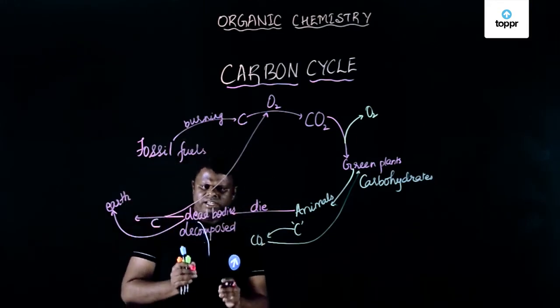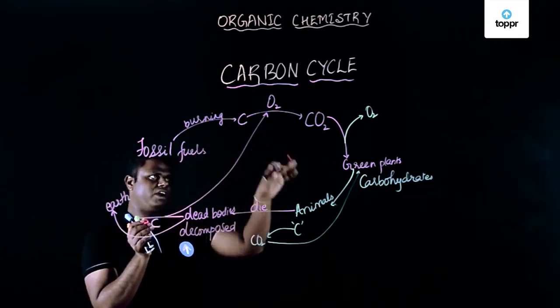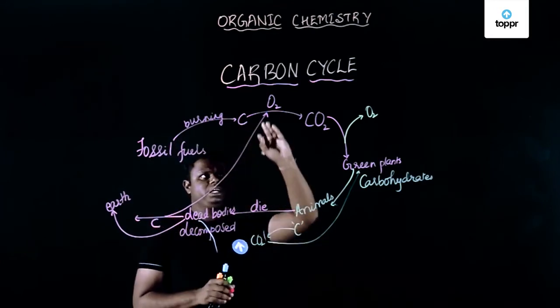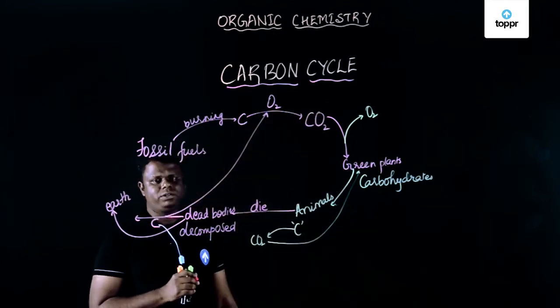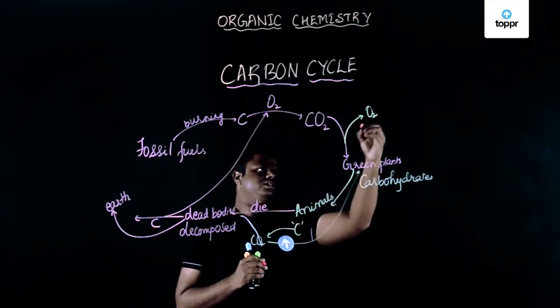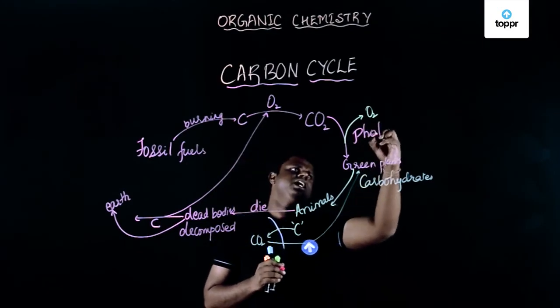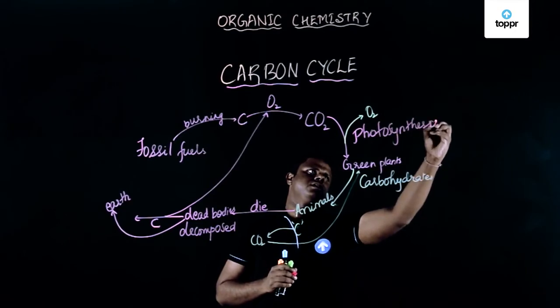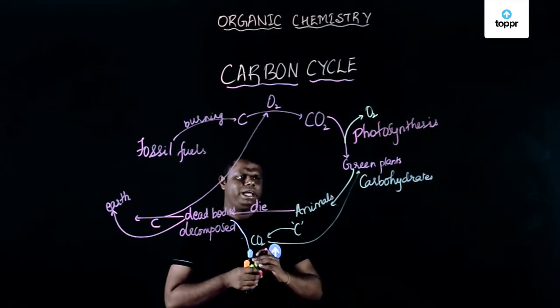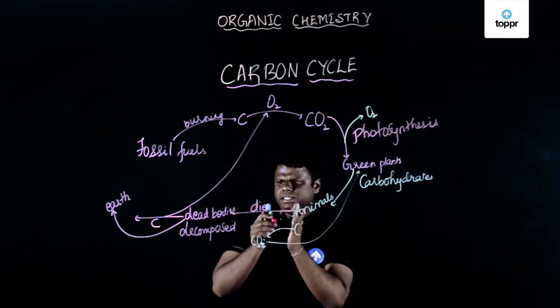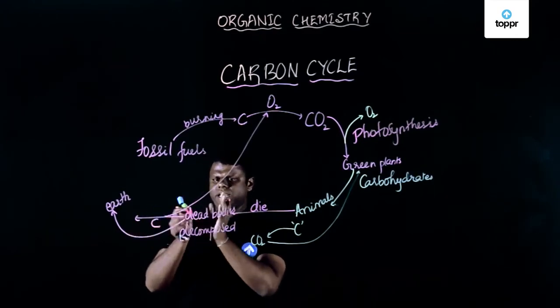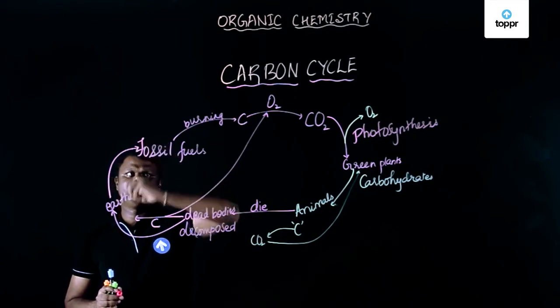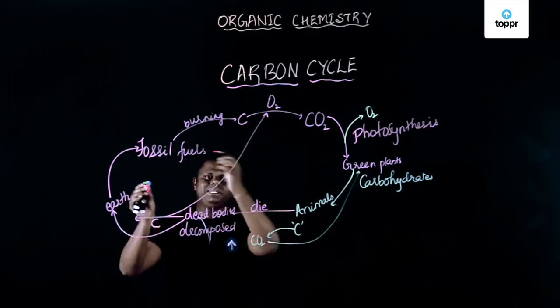This is the entire journey of carbon from fossil fuels. Carbon is obtained, carbon combines with oxygen to form carbon dioxide. This process is basically photosynthesis and then green plants are eaten by animals. Animals when they die, their dead bodies are decomposed and buried into the earth and this again forms a component of the fossil fuel. This is basically the carbon cycle.